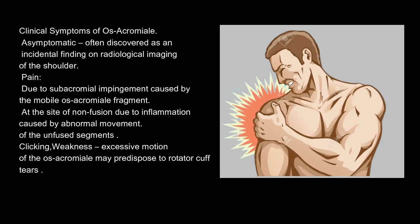Clinical symptoms of os acromiale: it is often asymptomatic and discovered as an incidental finding on radiological imaging. Pain may arise due to subacromial impingement caused by the mobile os acromiale fragment at the site of non-fusion, or due to inflammation caused by abnormal movement of the unfused segments. Clicking and weakness may occur, and excessive motion of the os acromiale may predispose to rotator cuff tears.